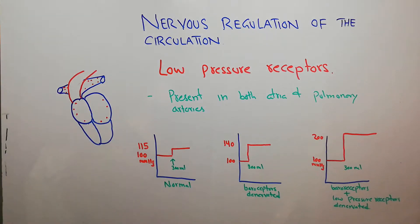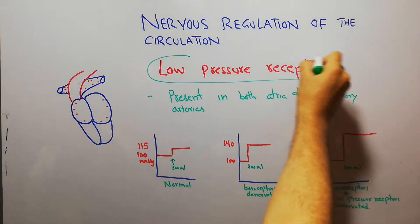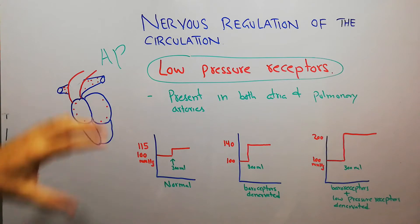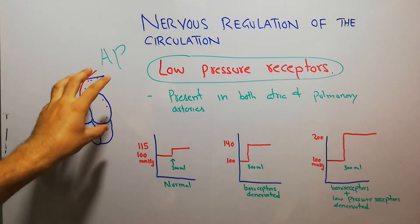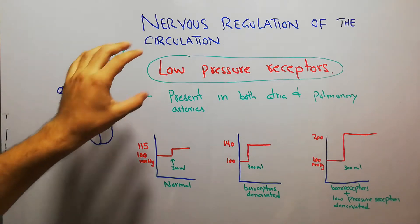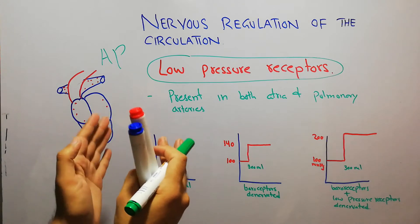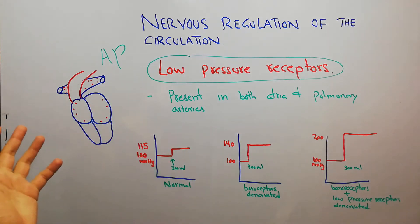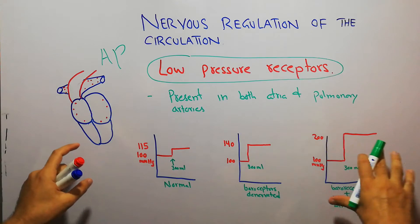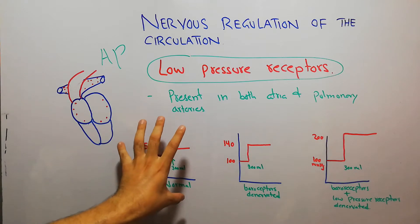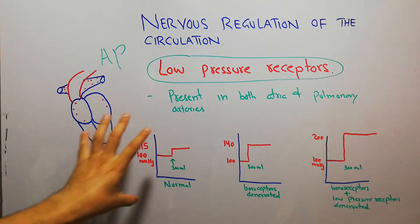These areas are basically low pressure areas — pressure at these sites is normally low. How do low pressure receptors help in control of arterial pressure? Basically, when the volume of blood increases, they help in control of arterial pressure. These receptors do not allow a rapid increase in arterial pressure, and this can be explained with a simple diagram.